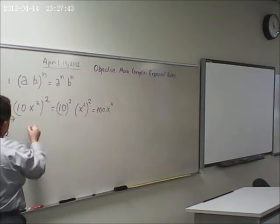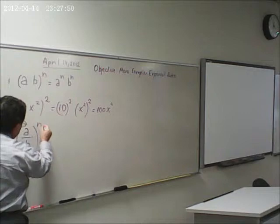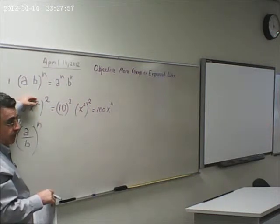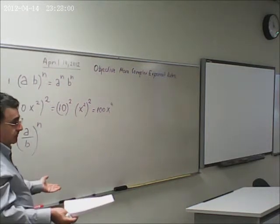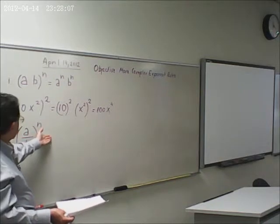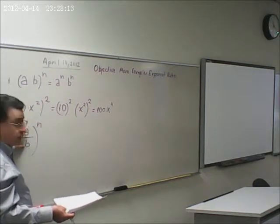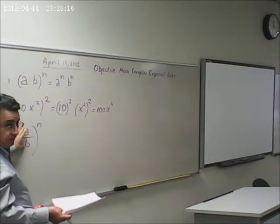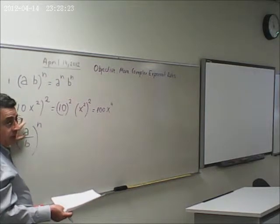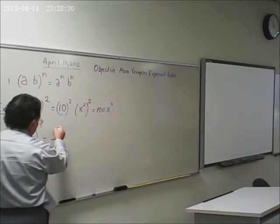Now, how about if I write the question (a/b) raised to the power of n? According to this, if we extend the product rule, and since division is the inverse operation, we can extend this rule. So this rational expression raised to the power of n — I can write it with a fraction bar, with the numerator raised to the power of n.